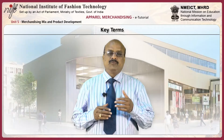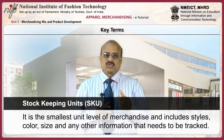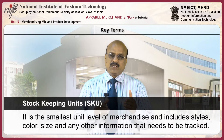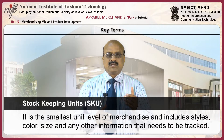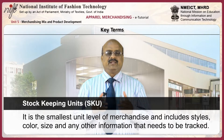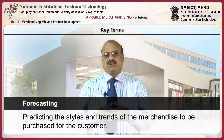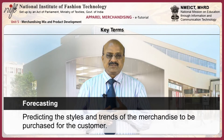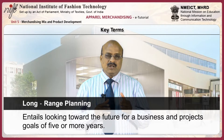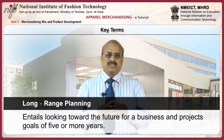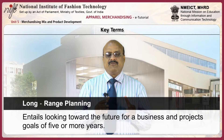Before we go further, let us review some key terms used in merchandising. Stock keeping unit (SKU) is the smallest unit level of merchandise and includes styles, colour, size, and any other information that needs to be tracked. Forecasting involves predicting the styles and trends of the merchandise to be purchased for the customer. Long range planning entails looking toward the future for a business and projecting goals of 5 or more years.